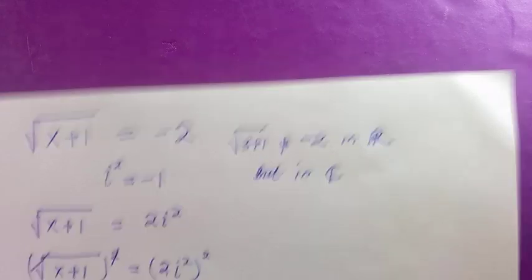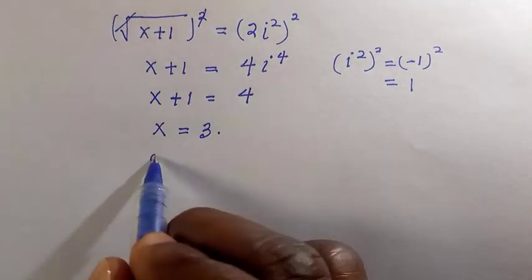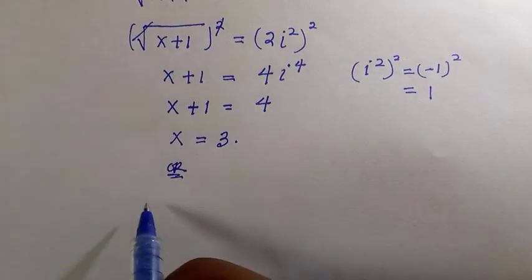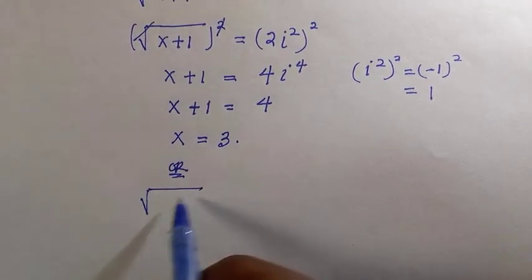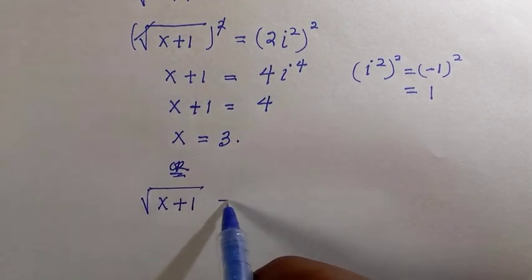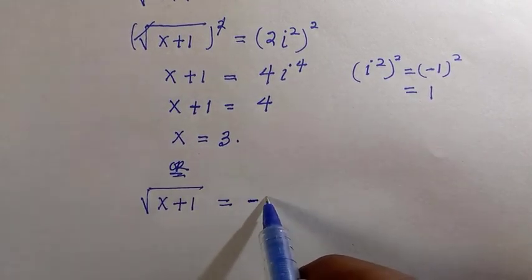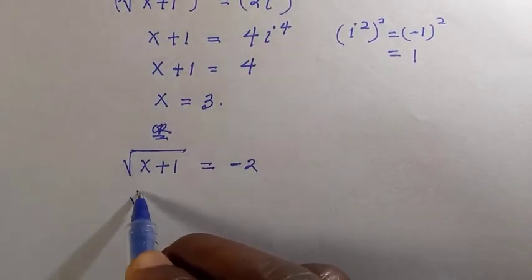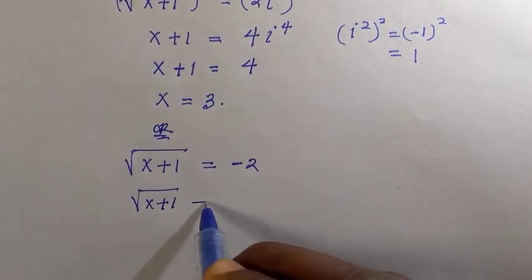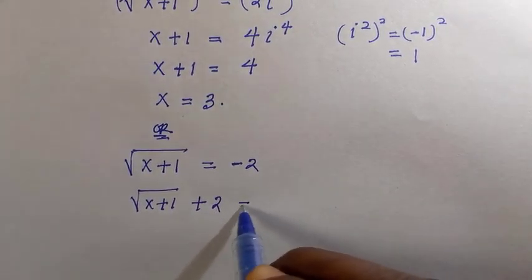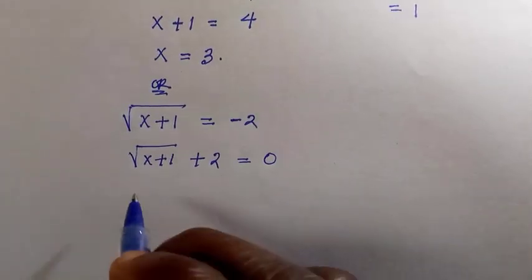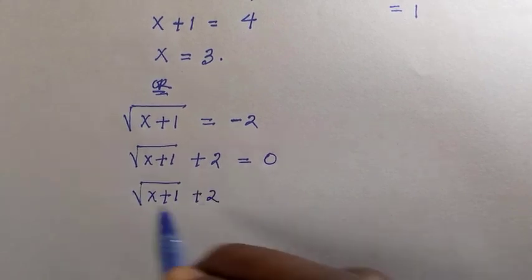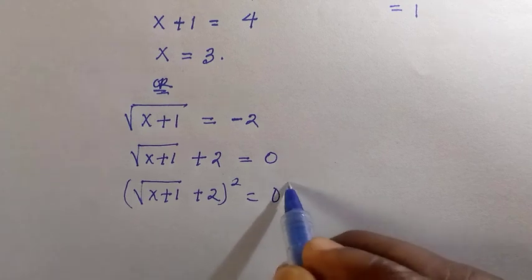If you consider this as one of the methods to solve this, just to check that x equals three, we can still assume another method. Here is the method: suppose you have the root of x plus one equals negative two. If I transfer negative two to the left-hand side, let's say we add two to both sides, so here becomes √(x+1) + 2 = 0. If I try to take the square of both sides, we have this equal to 0².